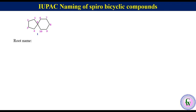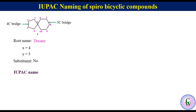Root name: since there are 10 carbon atoms in the ring and the compound is saturated, the root name will be decane. There is a 4-carbon bridge and a 5-carbon bridge, so x = 4 and y = 5. There is no substituent. So the IUPAC name will be spiro[4.5]decane.